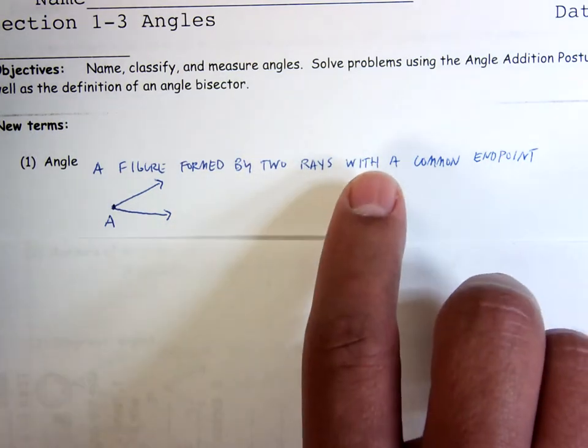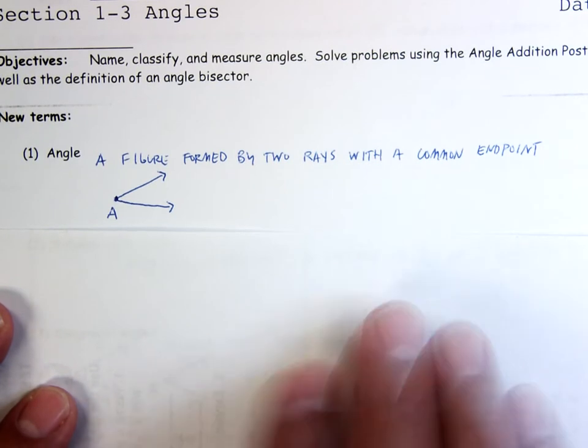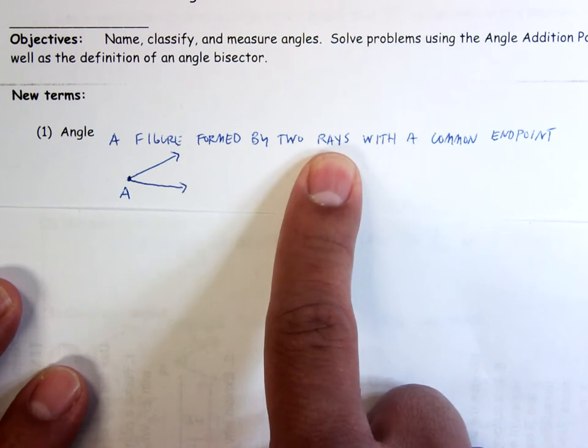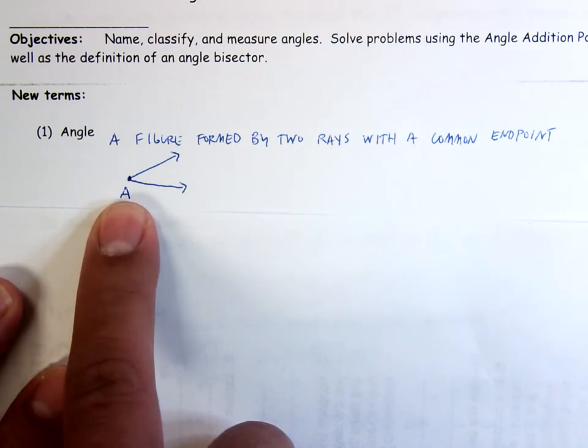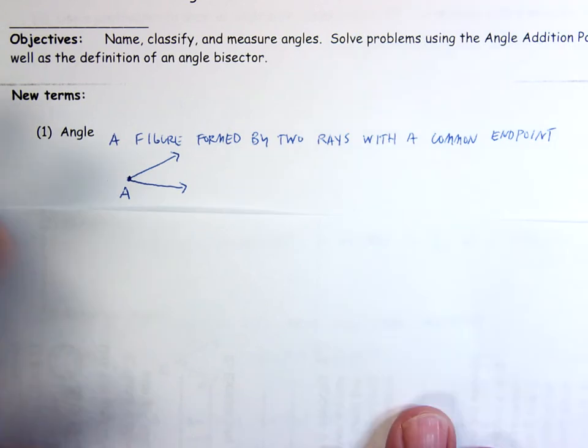All of us are pretty familiar with angles. I don't know if you've ever thought about exactly what makes an angle, but using vocab that we now have, an angle is formed by two rays with a common endpoint. Common endpoint A, and I do have my two rays. So that's what an angle is.